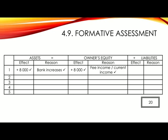Number two: paid insurance premium, 1,500 Rand. Bank — an asset — is affected as well as insurance. Insurance is an expense that you would pay to reduce the risk of fire, theft, etc. As such, it will be shown in owner's equity. Assets will have minus 1,500 (tick), bank decreases (tick). Owner's equity minus 1,500 (tick) for insurance expense (tick).